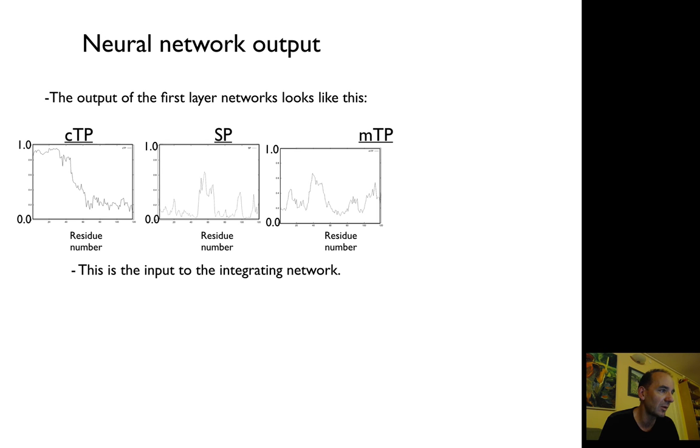In this case, you see that the first residues are quite reliably chloroplast transit peptide. But there's also a small signal for signal peptide around position 60 and mitochondrial targeting peptide around position 45. You take all these 120 first amino acids and put them into an integrated network. This first part is trained by the sliding window, and the input to the integrated network is basically three times 120 numbers and you will get an output.